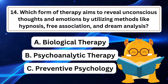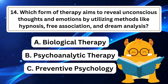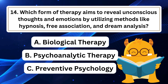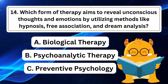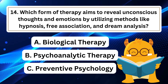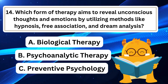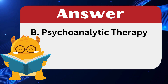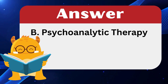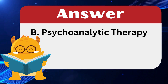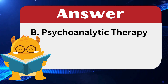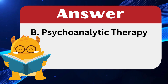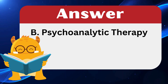Question 14: Which form of therapy aims to reveal unconscious thoughts and emotions by utilizing methods like hypnosis, free association, and dream analysis? The answer is B: Psychoanalytic therapy. Psychoanalytic therapy is an insight therapy focused on revealing unconscious thoughts and emotions, using techniques like hypnosis, free association (where patients say whatever comes to mind), and dream analysis. Biological therapy refers to treatments involving medications or surgery, while preventive psychology focuses on preventing mental illnesses.